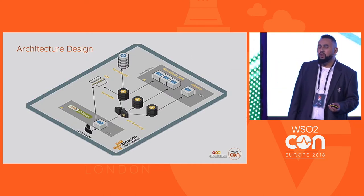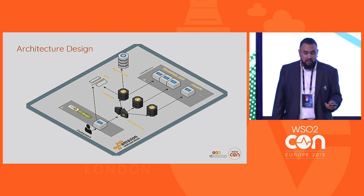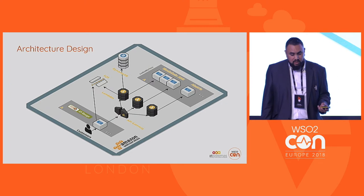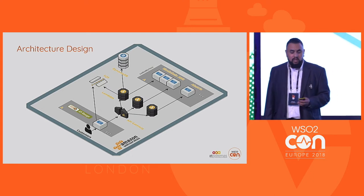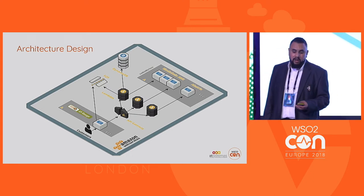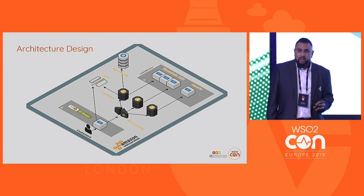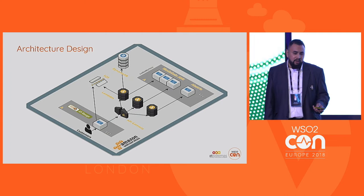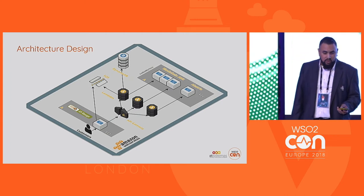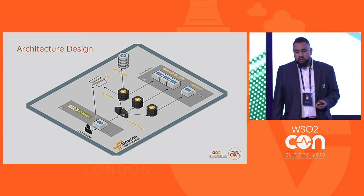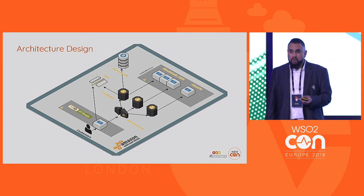Regarding the design of our solution, we designed a three-layer architecture. On one side, we have the WSO2 API manager installed in an EC2 instance on Amazon. On the other side, we have our Alastria blockchain node installed in another EC2 instance. In the middle, we have the middleware depicted by an API gateway — a bridging blockchain API gateway — which in turn implements a series of Lambdas to provide specific services.